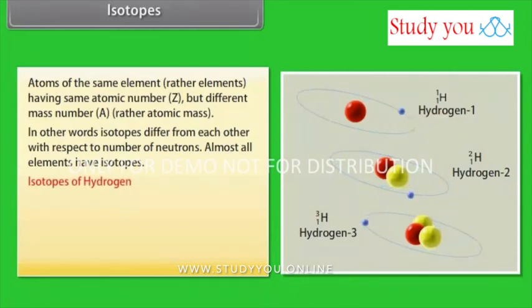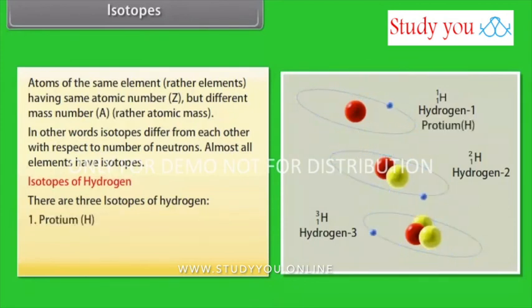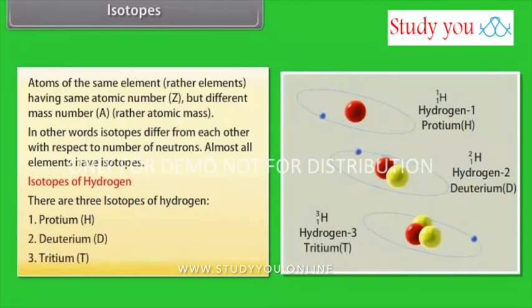Isotopes of hydrogen. There are three isotopes of hydrogen: Protium, Deuterium, and Tritium.